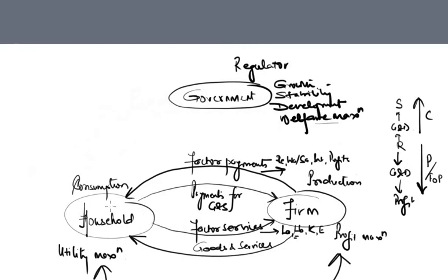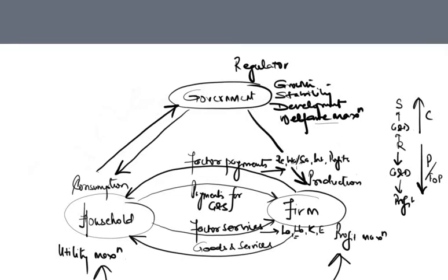Governments are also a party to this circular flow model in terms of their transactions with other entities. Just as we saw the interaction between household and firm, households also interact with governments — and this is also a cyclical, two-directional process. Similarly, the government also interacts with firms. The government, in order to facilitate welfare and investments within the economy and to reduce the disequilibrium of distribution of wealth among different members of society, might try to regulate the whole system.